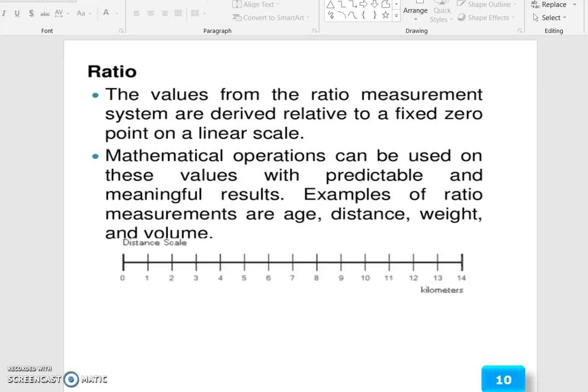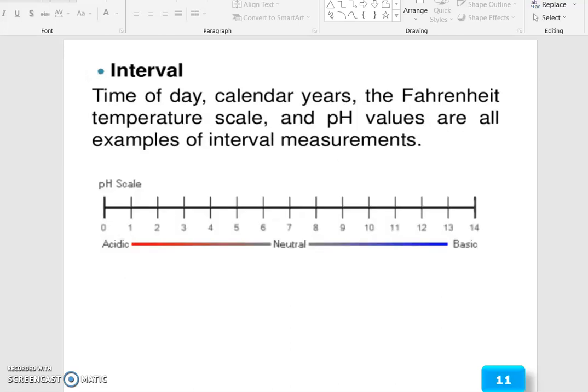The second one is the interval. Time of day, calendar year, the Fahrenheit temperature scale, and the pH values are all examples of interval measurement. See the pH scale from 0 to 14. Below 6.5 or 7.5, 8.5.